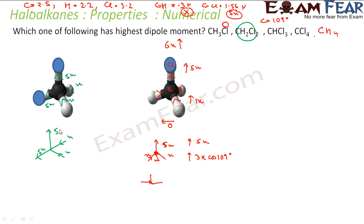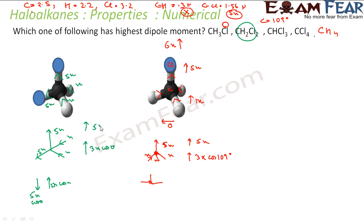For CH2Cl2, if we look at the vertical components: the two chlorines contribute 2·5x·cos(θ) = 10x·cos(θ) downward, and the two hydrogens contribute 2x·cos(θ) upward. That means the net vertical component is (10x − 2x)·cos(θ) = 8x·cos(θ). With cos(θ) ≈ 0.33, the net vertical dipole is about 3x — wait, more carefully: the net vertical is about 3x cos θ ≈ 1x net difference.